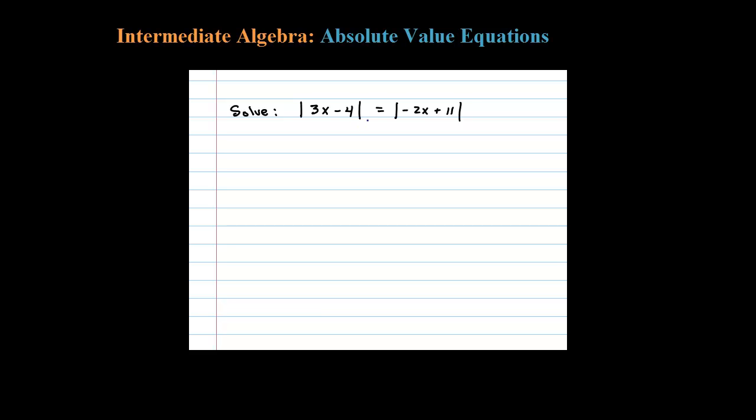Here we're asked to solve an absolute value equation, but here we have two absolute values. To do that, you take the argument of one and set it equal to plus or minus the argument of the other.